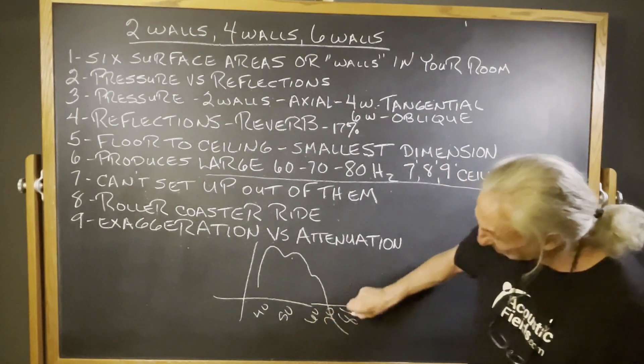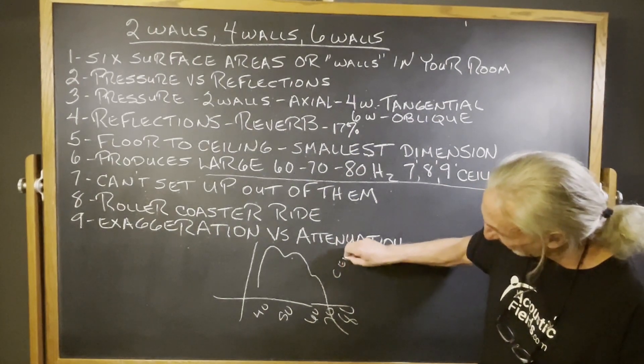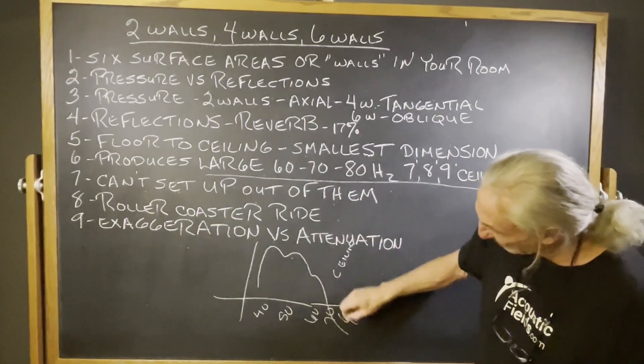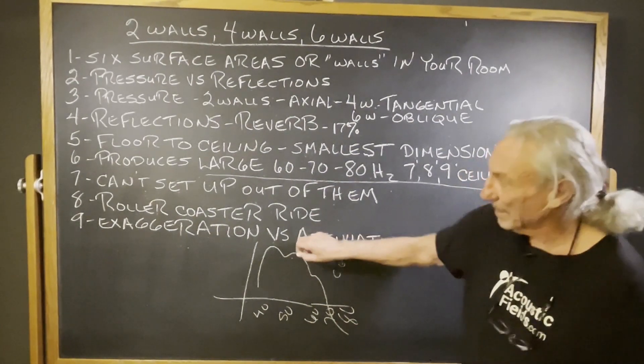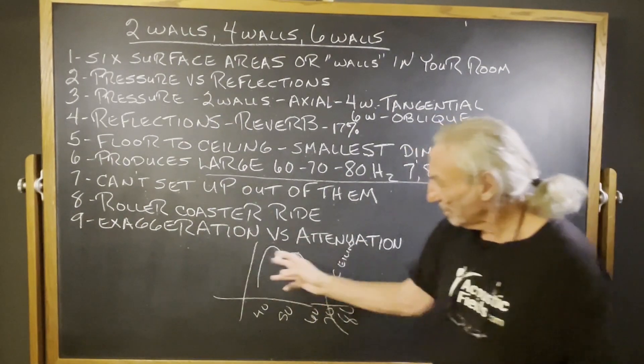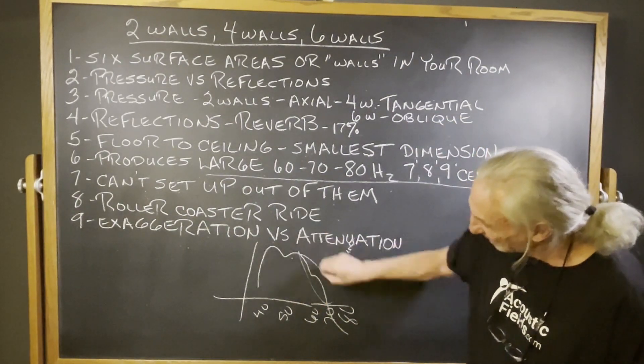80 cycle region because that's the ceiling getting in there. So you got this huge peak. So you got exaggeration with the peak. Then you got this attenuating slide here.